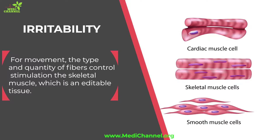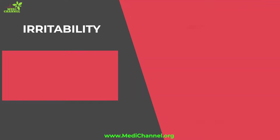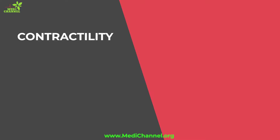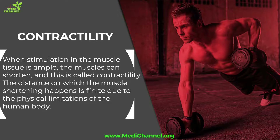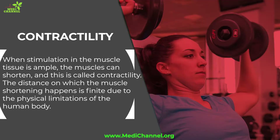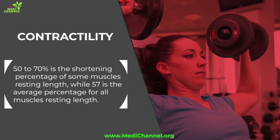Contractility: when stimulation in the muscle tissue is ample, the muscles can shorten — this is called contractility. The distance over which muscle shortening happens is finite due to the physical limitations of the human body. 50 to 70 percent is the shortening percentage of some muscles' resting length, while 57 percent is the average percentage for all muscles' resting length.